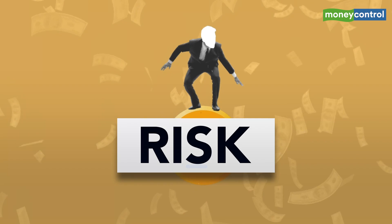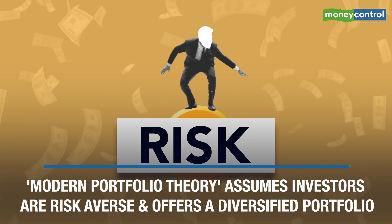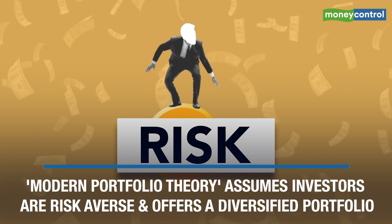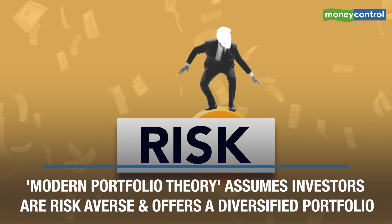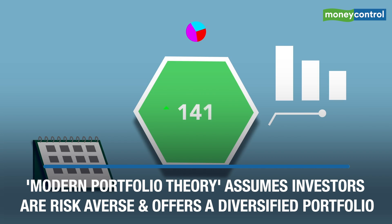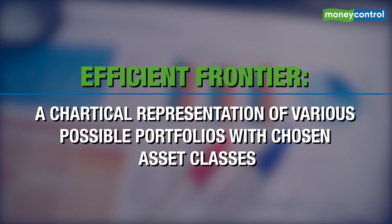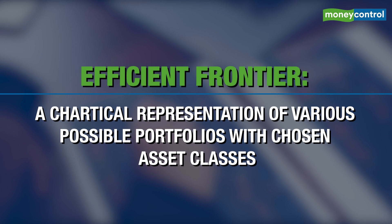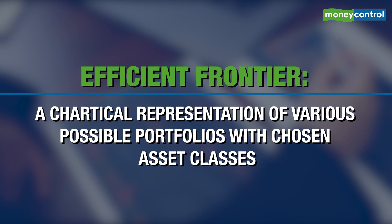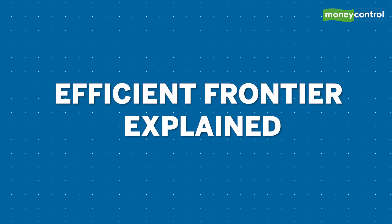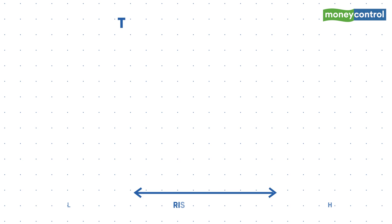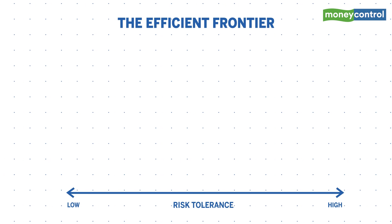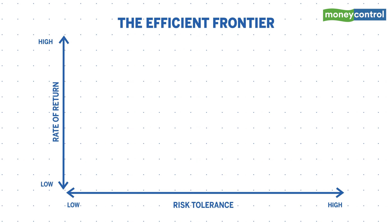The Modern Portfolio Theory assumes that investors are risk averse and offers a diversified portfolio which is less risky than the individual pieces that are part of it. In comes the efficient frontier — a graphical representation of the various portfolios possible with the chosen asset classes. It plots the risk on the x-axis and the returns on the y-axis.